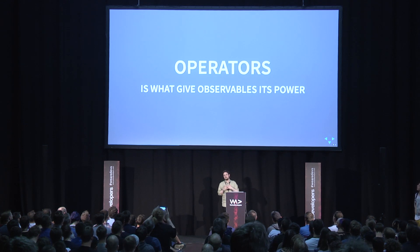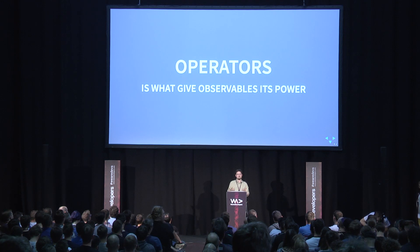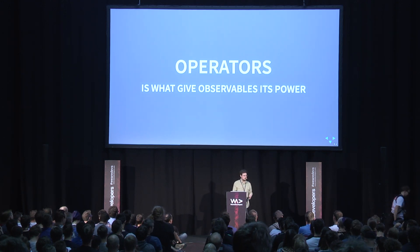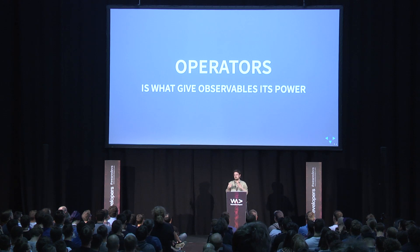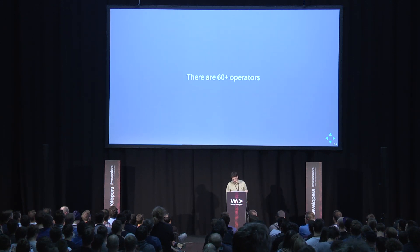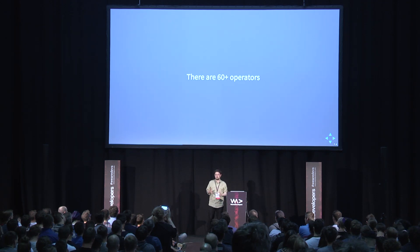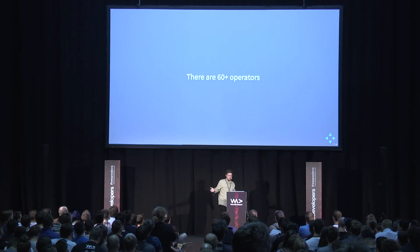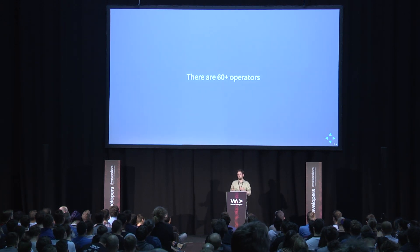What makes the library powerful isn't just how you create observables — it's the operators. There are 60-plus operators, and they save a lot of time because today you'd write a lot of manual code to do what operators already do. Operators give RxJS its power. I'm not going to tell you to learn all 60 — there are about five or six core operators you start with and build your knowledge from there.